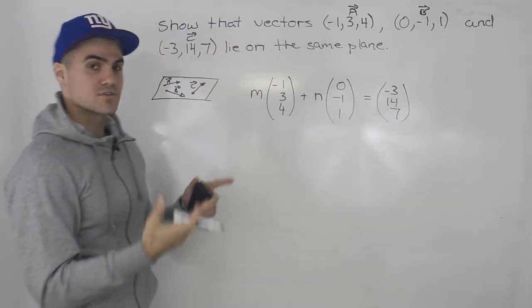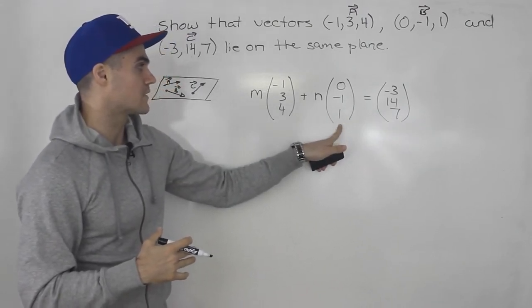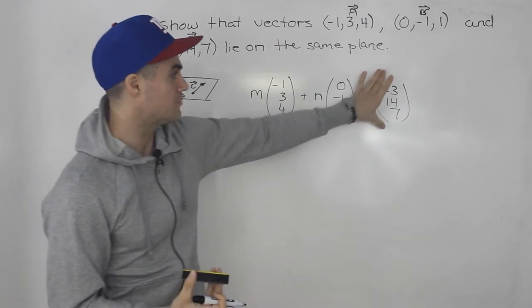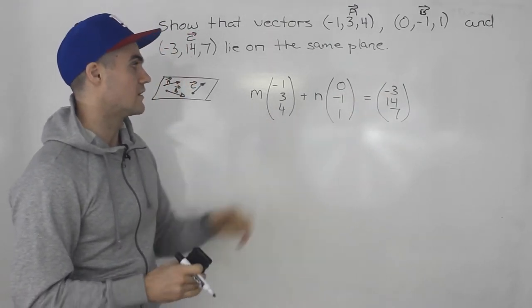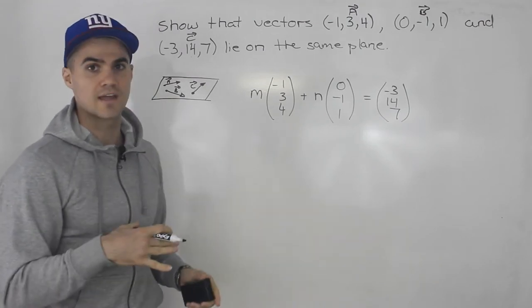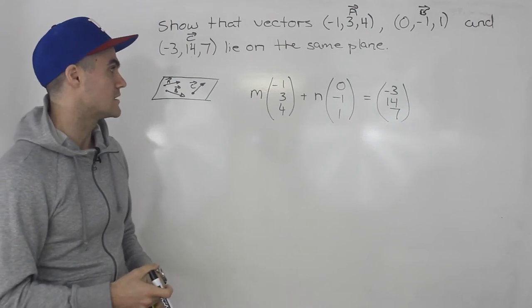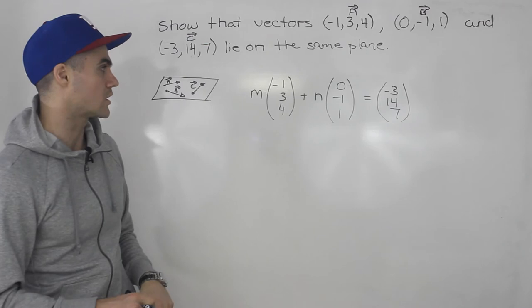Now we could have also switched this up, so we could have maybe even put this vector here, this vector over here. Personally, I like to take the vector with the biggest numbers and put it here because then when you solve for that m and n, there's a smaller chance that you're going to be working with fractions. Not guaranteed, but it's a higher probability that these will be integers that you're working with.